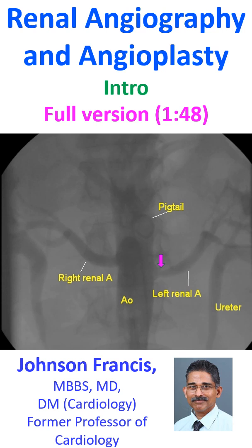It may be better to do selective angiograms after locating the renal arteries by non-selective aortogram, as in this case. This will help to identify multiple renal arteries if present.